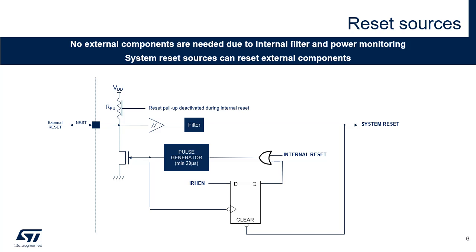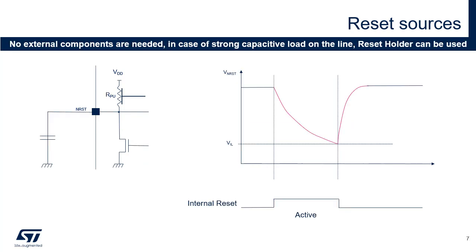Additionally, except the debug pins and some test pins, all I/O pins are placed in analog mode during and after reset to eliminate power consumption through the Schmitt trigger when the I/Os are floating under reset and before software initialization. The purpose of the reset holder is to maintain NRST driven low until the voltage level of this signal goes below VIL. This is useful when the NRST line has an important capacitive load.